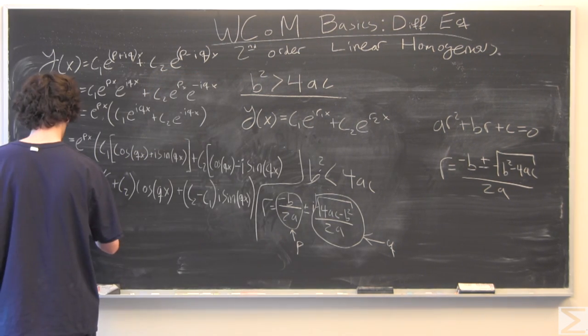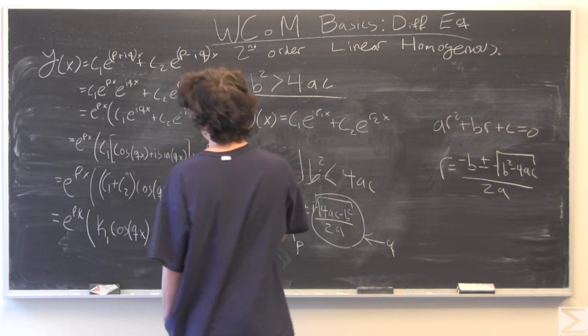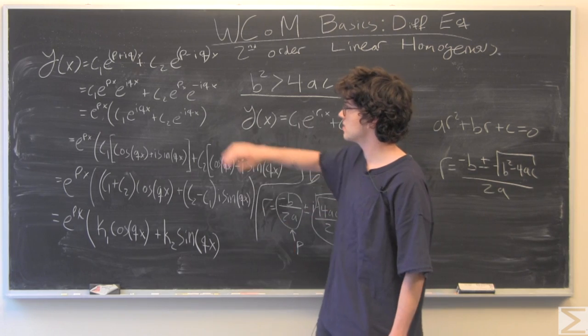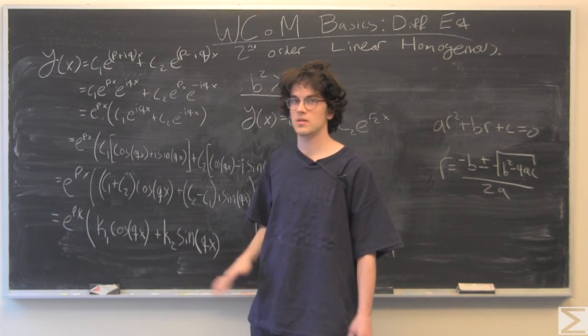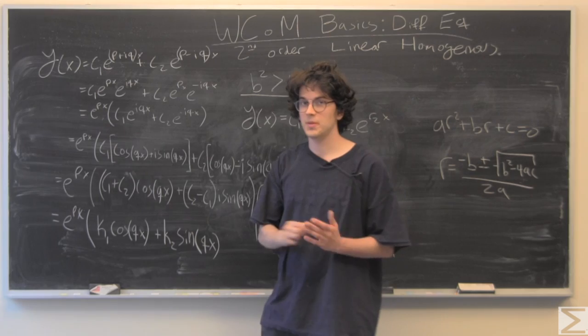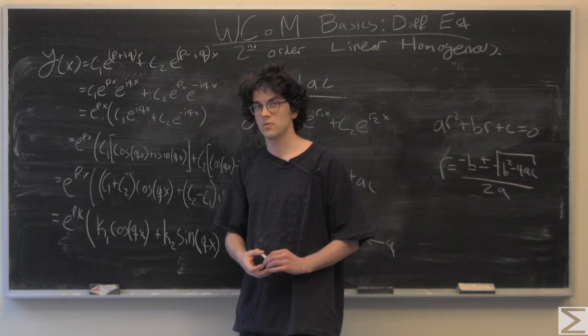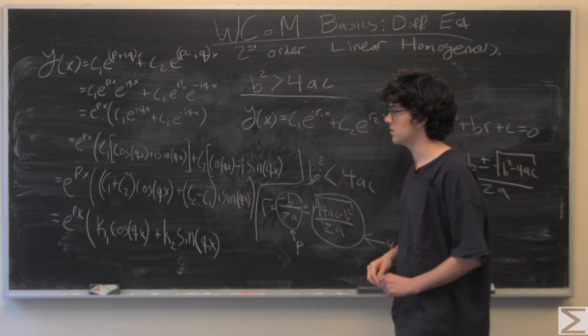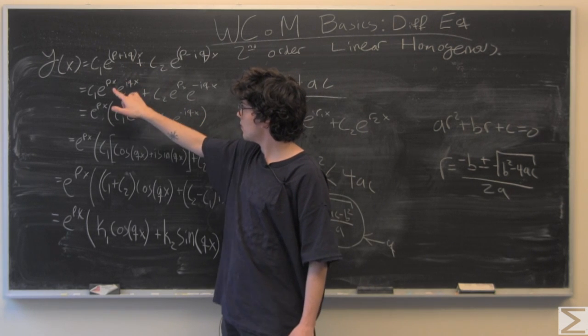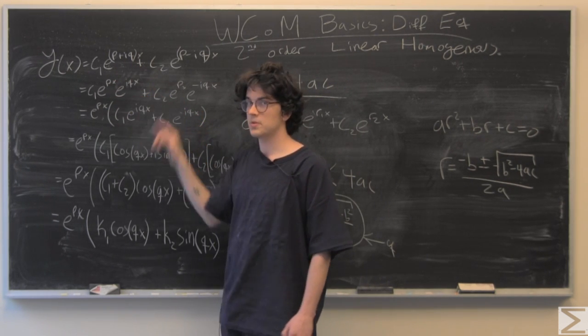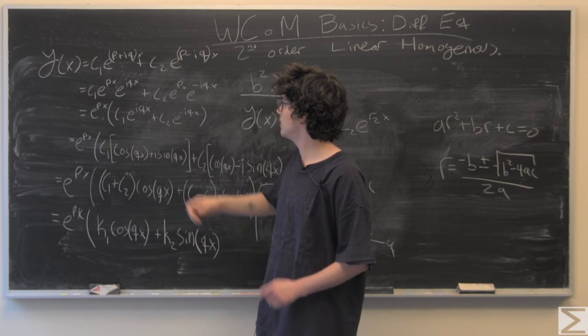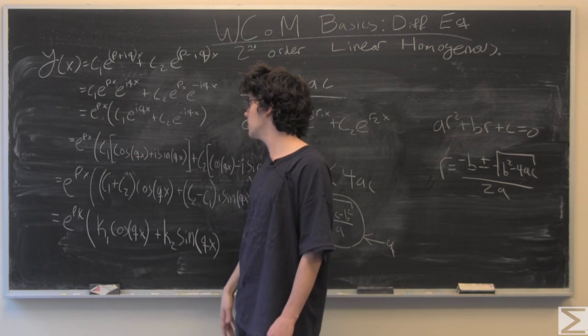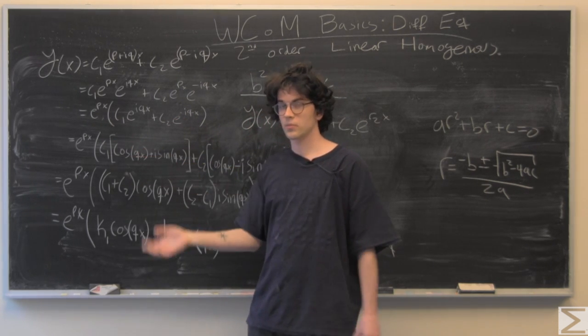Let's take a look at this problem. I've just done a bunch of simplification based on the fact that we have put p plus iq and p minus iq as our roots. Since p plus or minus iq solves the characteristic equation, I've broken up the exponents using the exponential rules. Since e to the px is shared here, I've factored that out.